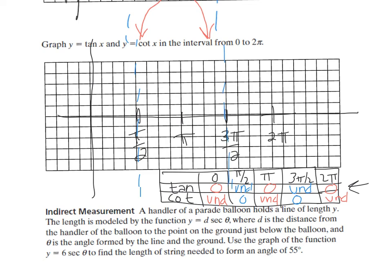Tangent of pi over 2 is undefined because tangent equals sine divided by cosine, and at pi over 2 the cosine is 0. So at increments of pi over 2, tangent is undefined. Those other two increments are where cotangent is going to be undefined. The tangent function is drawn in blue.